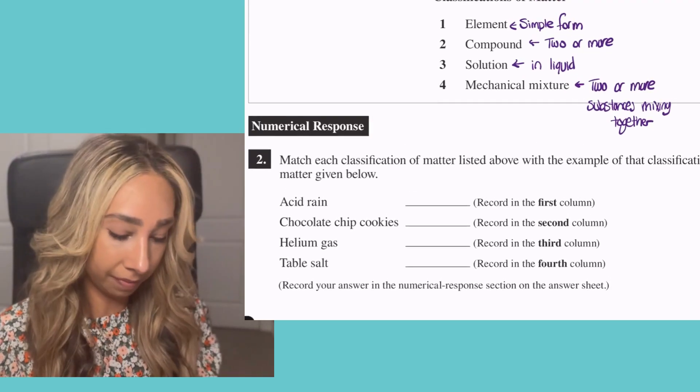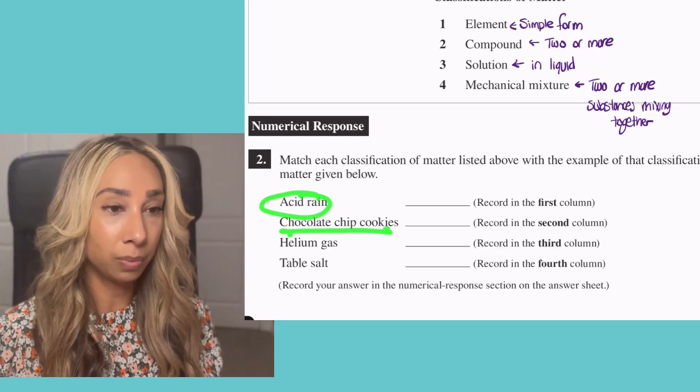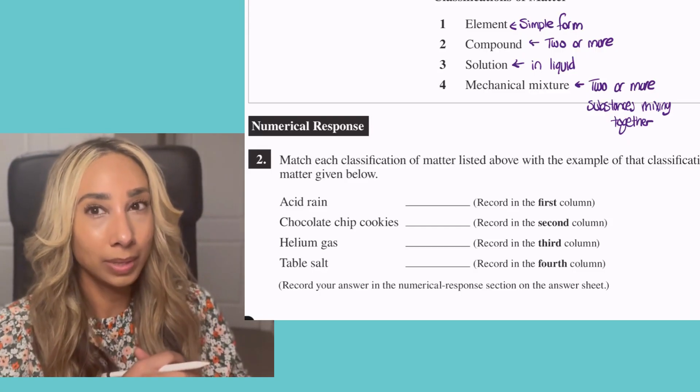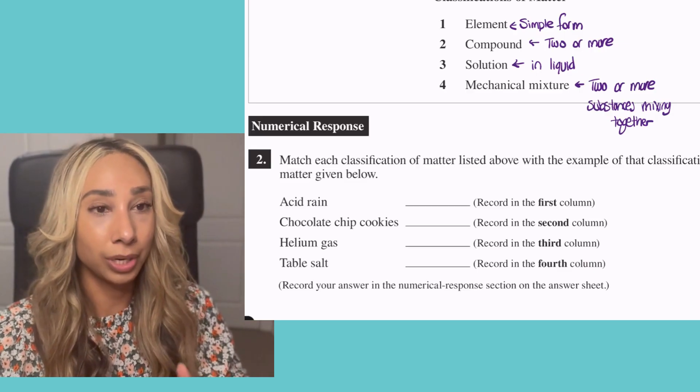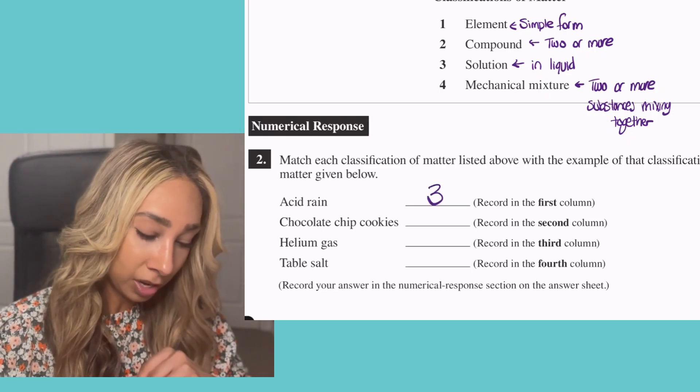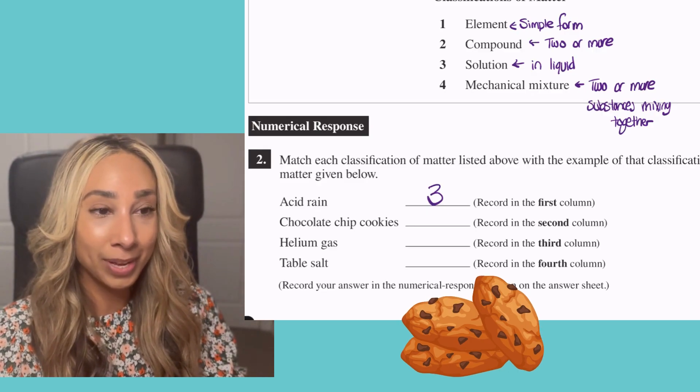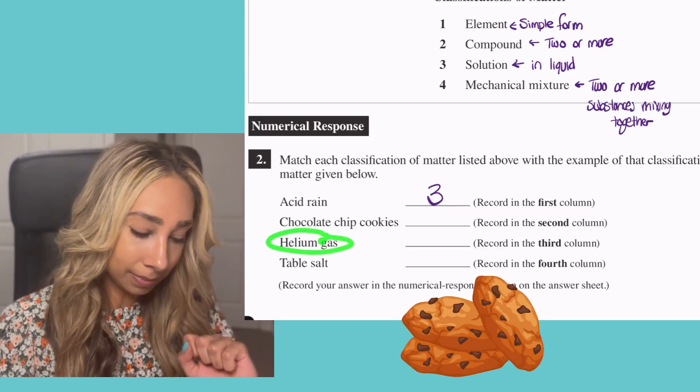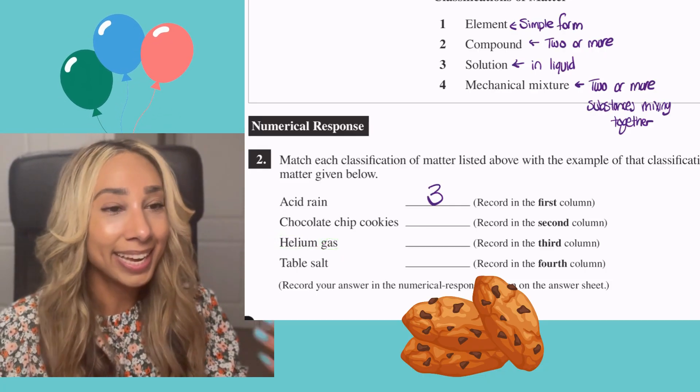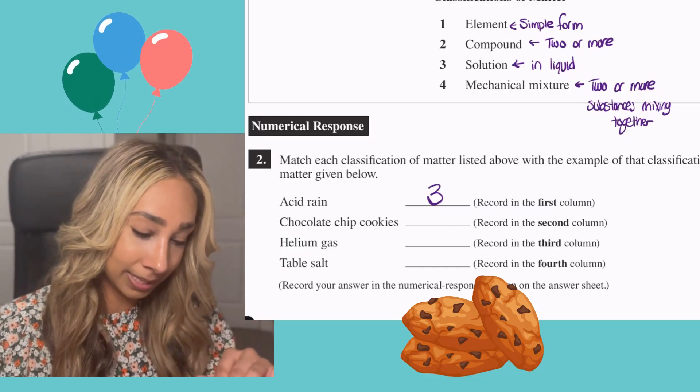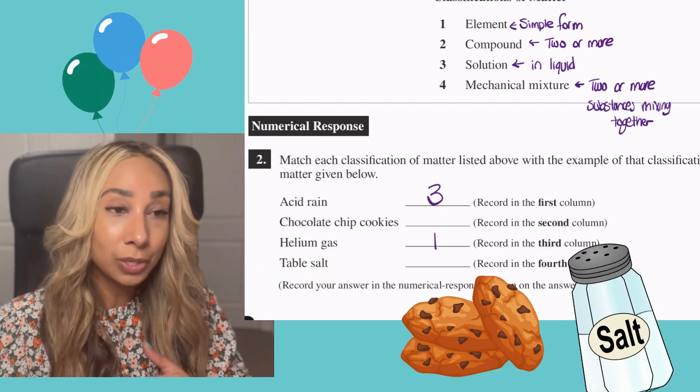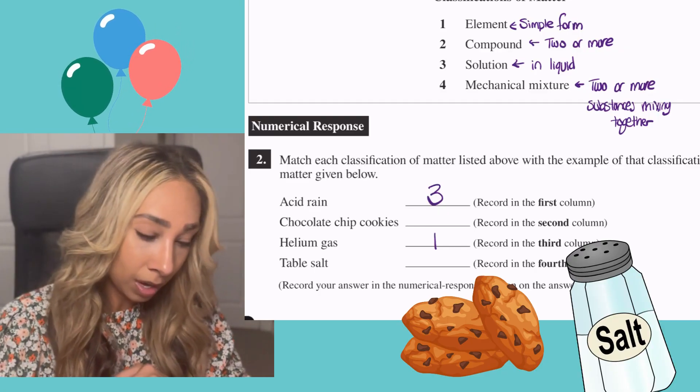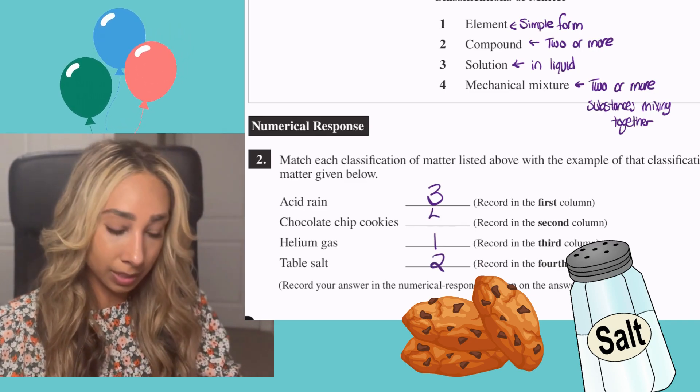Now we're going to look at the examples and decide where they fit. Acid rain is a form of a solution. The only one that fits that is three. Chocolate chip cookies, it's not an element, it's made up of two or more substances, so we can come back to that one. Helium gas, that's what I fill up in balloons, that on its own tells me it's one element in its simplest form. That's definitely a one. Table salt is a common compound grade nines are supposed to know. It's made up of sodium and chloride, so that's definitely a compound, leaving us with chocolate chips being our mechanical mixture.